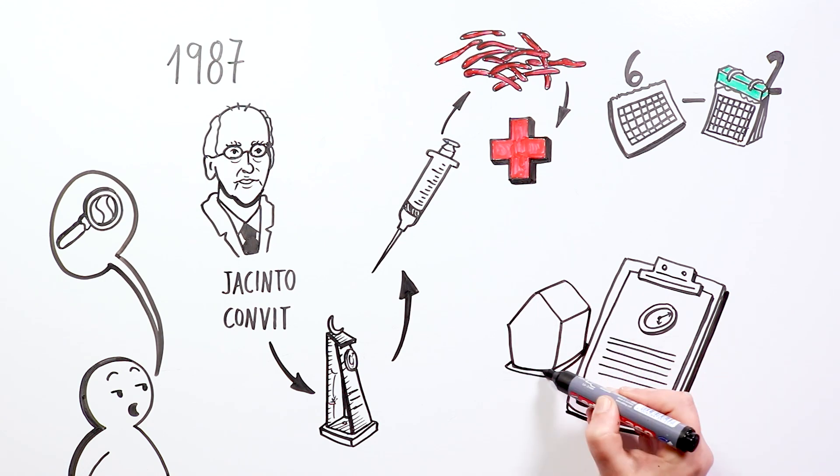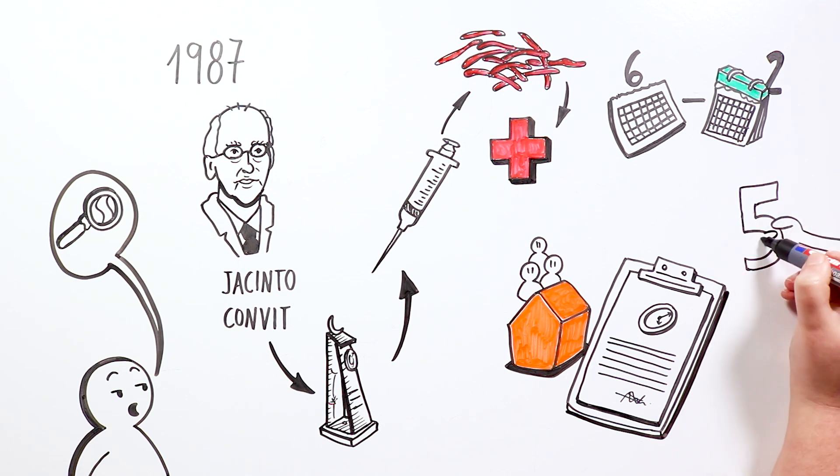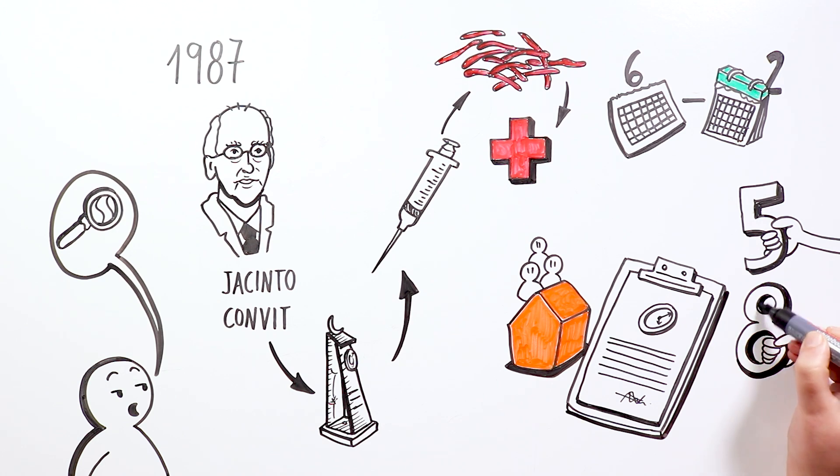In the case of household contact, annual checkups are recommended for at least five years after the last contact with a person in the infectious phase, because the symptoms can take up to eight years to appear in lepromatous leprosy.